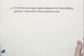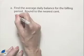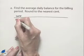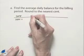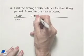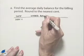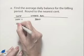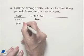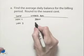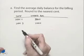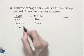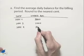Find the average daily balance for the billing period, rounded to the nearest cent. We'll start with a column for the dates that are important. We start on September 1st with an unpaid balance of $3,800. On September 5th, a payment of $800 was made, subtracting from $3,800 to give an unpaid balance of $3,000. On September 9th, a charge of $40 is added to $3,000, giving us $3,040.